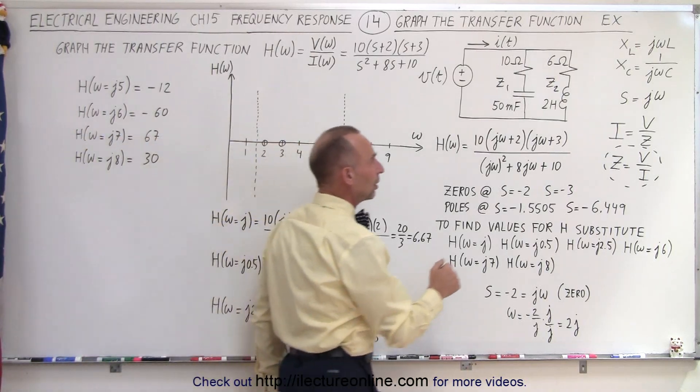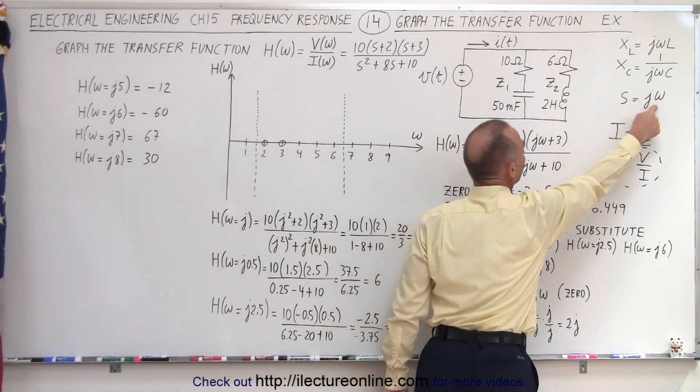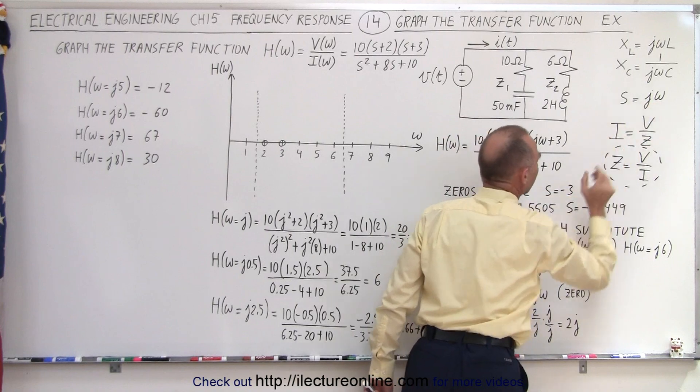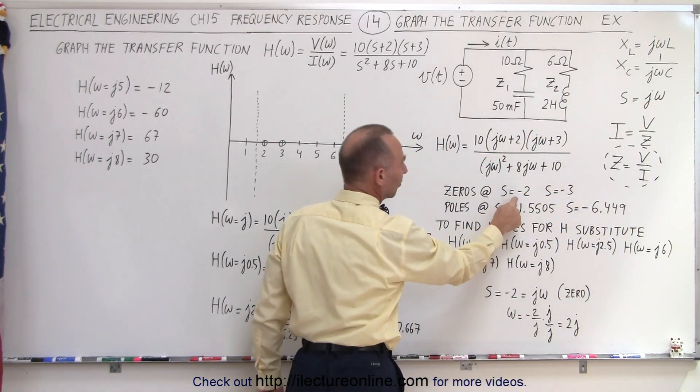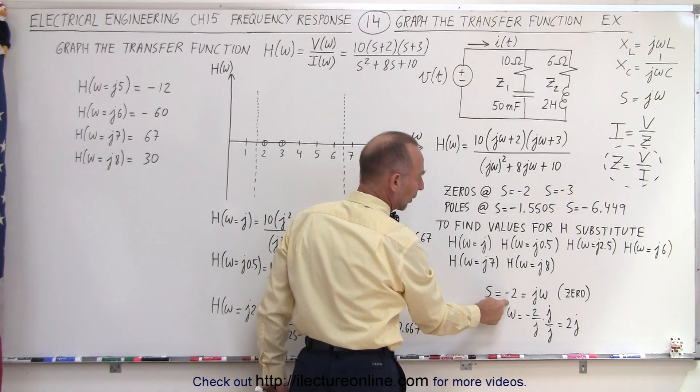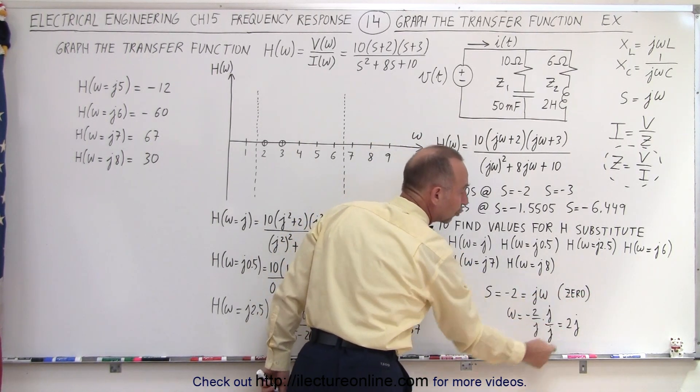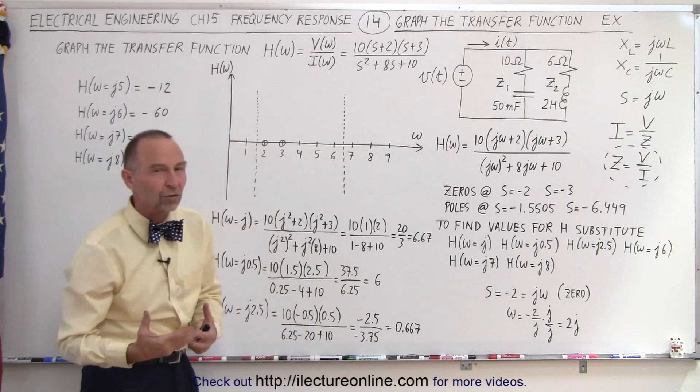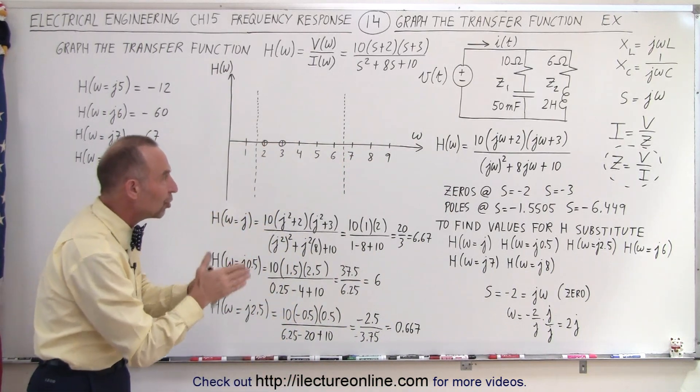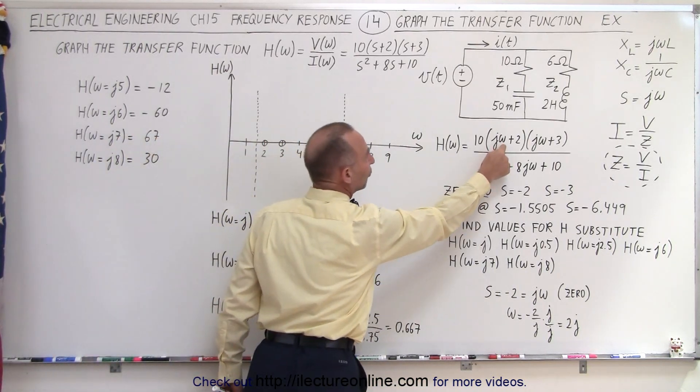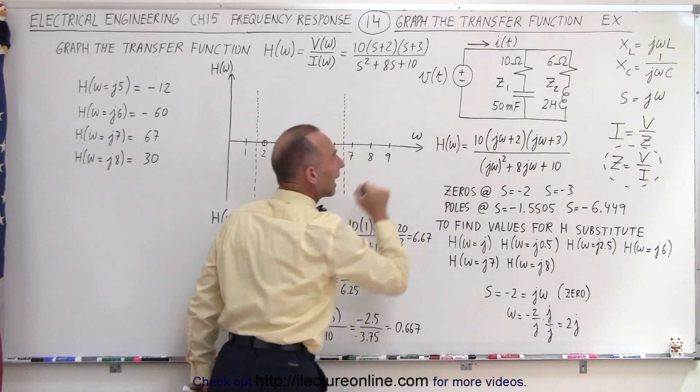Now notice, since we have the relationship between s and omega like this, s equals j omega, then we realize when s is equal to j omega for one of the zeros, we get omega equals 2j. And so one of the ways to evaluate it is to plug that 2j into our equation here for omega and then see what H becomes.